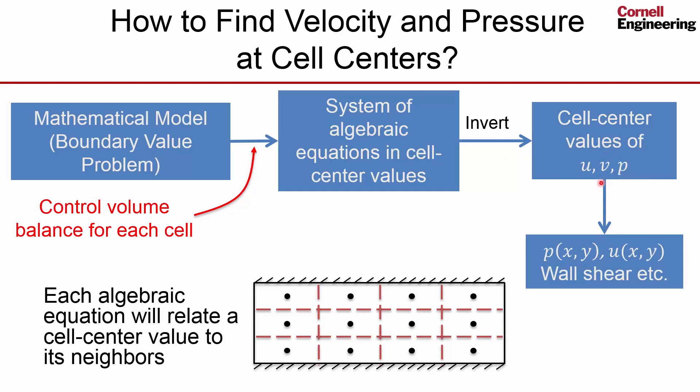Everything else is extracted from those cell center values for u, v, p. For instance, the pressure field, the velocity field, wall shear, et cetera. And you do that through the process called post-processing.